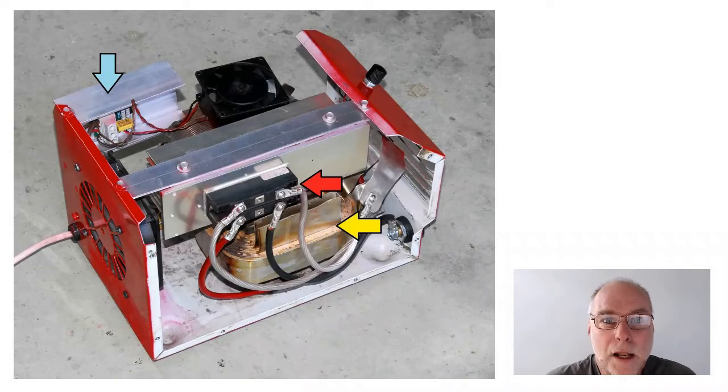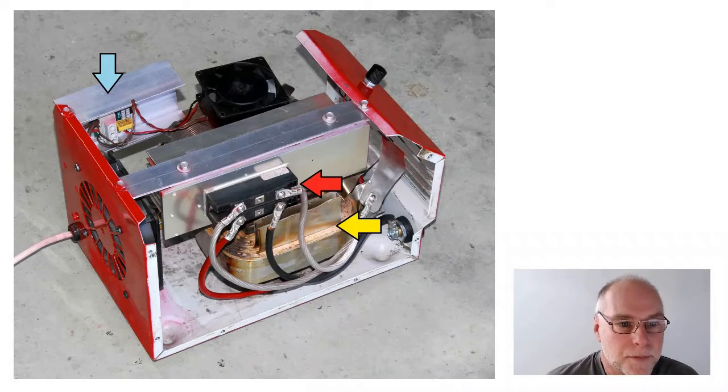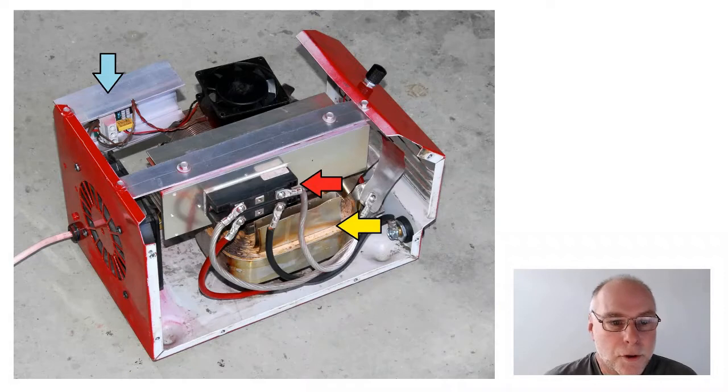So let's take a look inside the repurposed welder. Well, on the left at the top where the blue arrow is, that's the silicon controlled rectifier module. And you can see I've moved its knob, its adjustment knob, to the front of the welder, which has now become a battery charger. The yellow arrow points to the original transformer, big, hefty transformers in these welders, which of course is why they're so heavy and why originally they were fairly expensive.